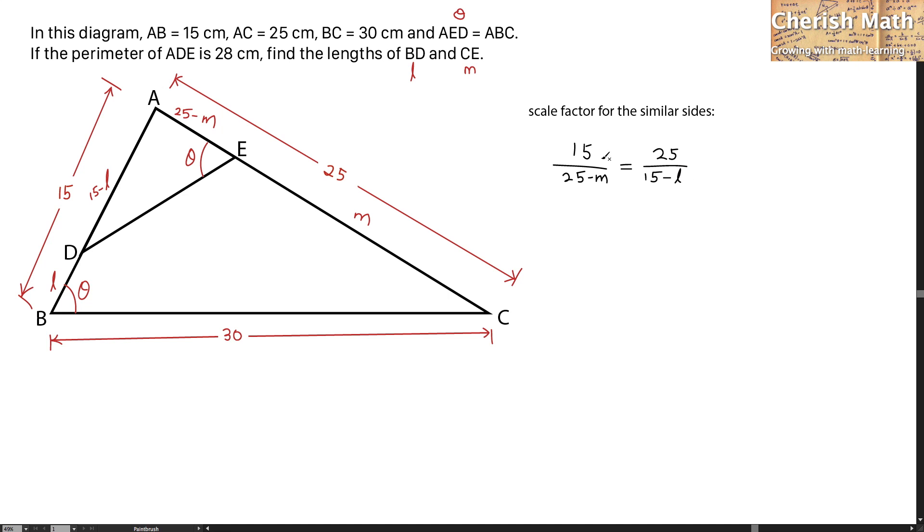I'm going to simplify this equation by dividing by 5, and I get 3 here and 5 there. So this will be 3 over 25 minus M equals 5 over 15 minus L. I name this as our first equation.